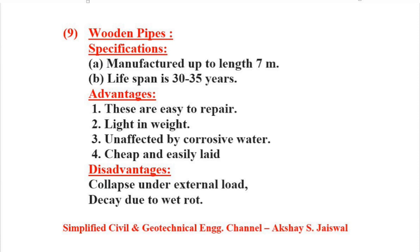Wooden pipes are manufactured up to a length of 7 meters and have a lifespan of 30 to 35 years. Advantages: they are easy to repair, light in weight, unaffected by corrosive water, cheap, and easily laid. Disadvantages: they may collapse under external load and decay due to wet rot.